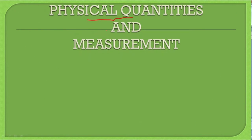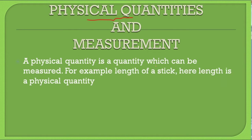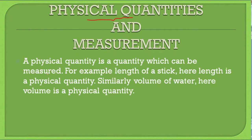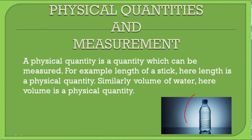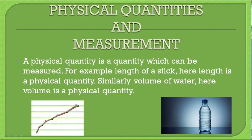In today's class we'll do physical quantities and measurement. So what does physical quantity mean? A physical quantity is a quantity which can be measured. Whatever you can measure is called a physical quantity. For example, we have the length of a stick — length is a physical quantity because you can measure it. Similarly, you have water here. Can you measure the volume of this water? Yes. That means volume is also a physical quantity.